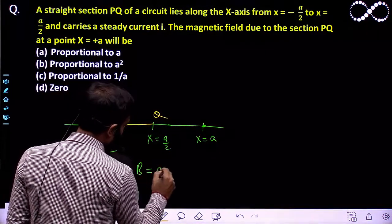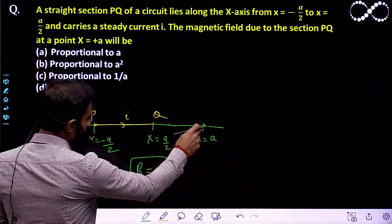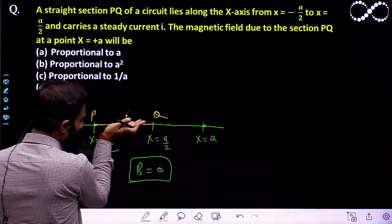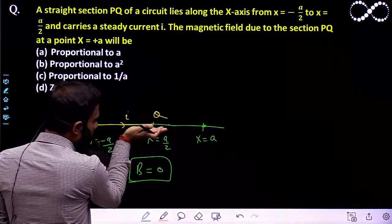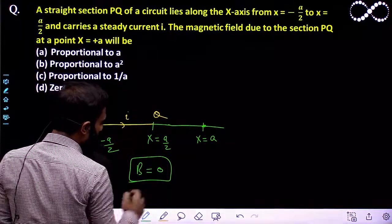Magnetic field will be zero. The reason is this point is lying along the line along which the current is flowing. There is no perpendicular distance of this point from this section PQ, so the magnetic field will become zero.